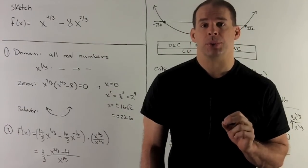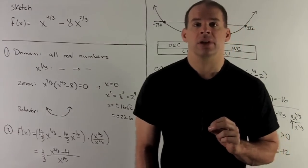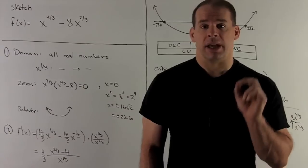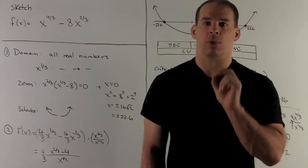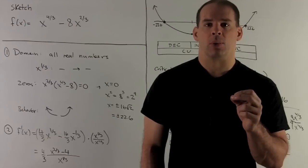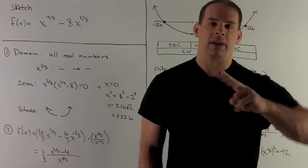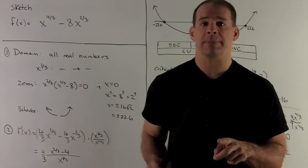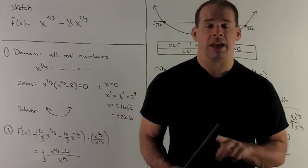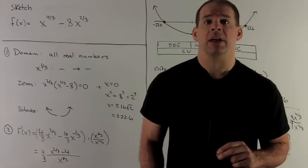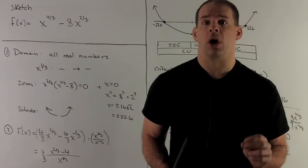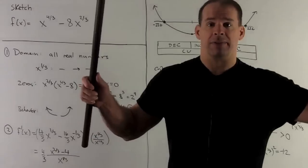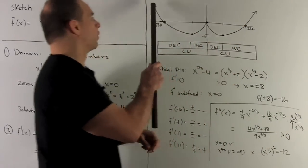Next, end behaviors as x goes to +∞ and -∞. Everything is determined by the lead term x^(4/3), rewritten as (x^(1/3))^4. Since x^(1/3) goes to +∞ as x → +∞ and to -∞ as x → -∞, raising to the 4th power turns all negatives to positives. So on both sides, the function goes up to +∞.